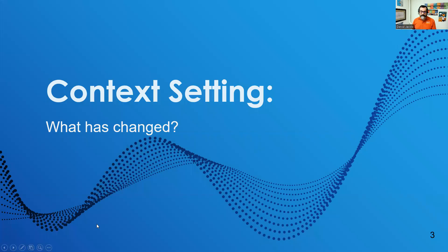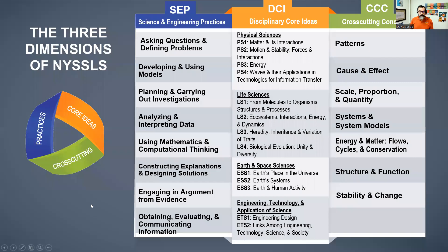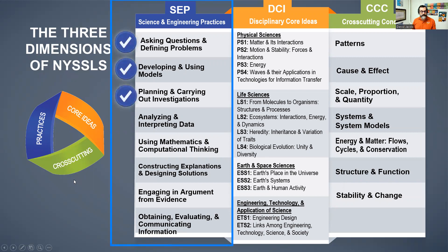Let's first set the context for what's changed in science education in New York State. Our first graphic shows us three dimensions of the new science standards. The first dimension is the science and engineering practices, also abbreviated as SEPs. I've highlighted three specific science and engineering practices — not the most important, but ones that are new for our science learning standards. The first one is asking questions or defining problems — asking questions is what we do in science, and defining problems is what we do for engineering, and it's really the foundation of all our science learning.